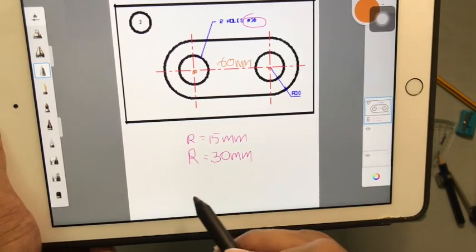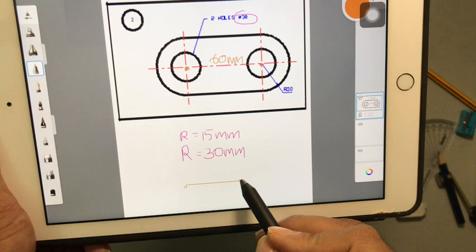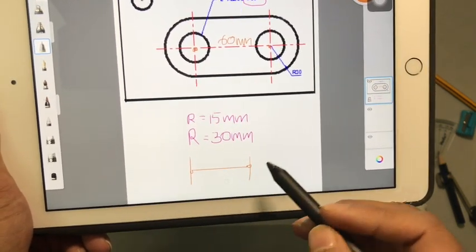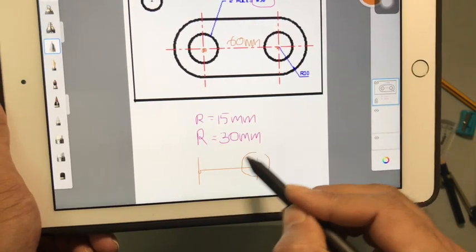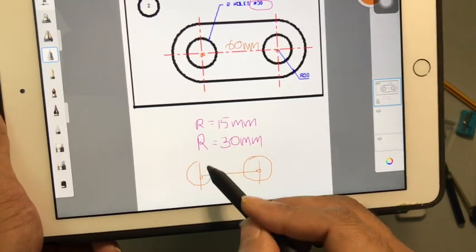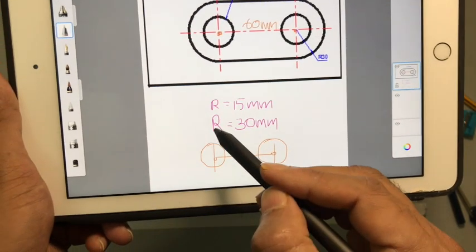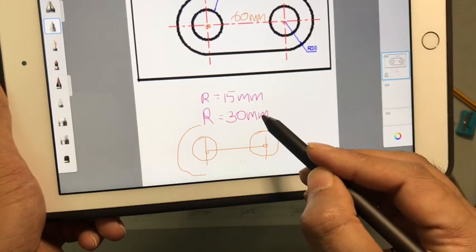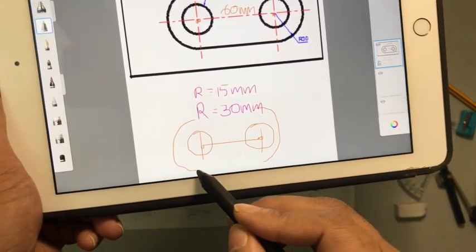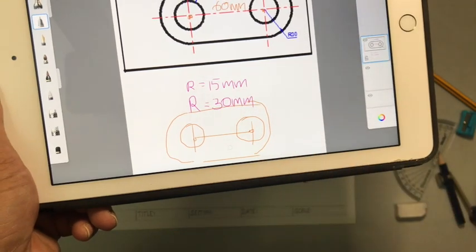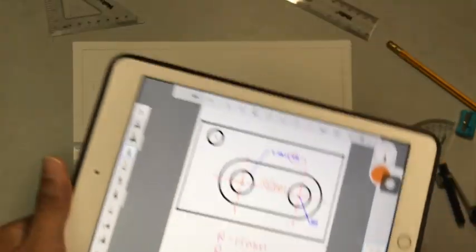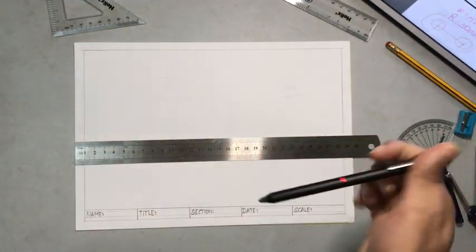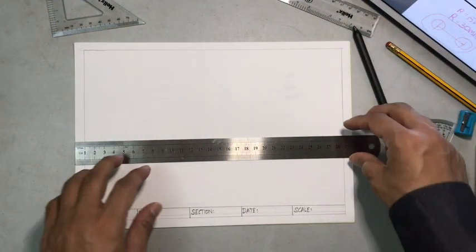So the first thing that we will do is, we will draw a line for 60 mm. And then we will draw two vertical lines. And then we will draw a circle of 15 mm, the next circle of 15 mm. And then we will draw a semicircle of 30 mm, the next semicircle of 30 mm. And then we will join these lines. So that's the plan. Keep the eye pattern aside for reference so that you can always look at what you are drawing.